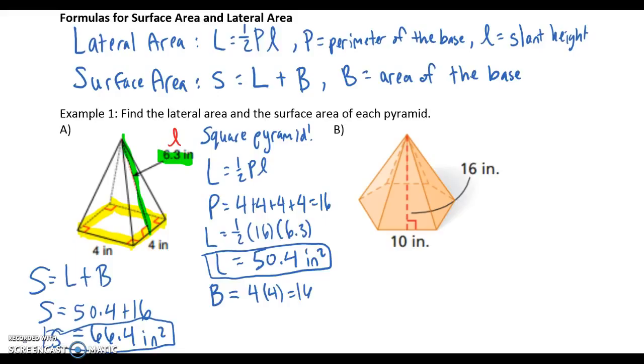Part B. What kind of pyramid is this? And can you tell me the perimeter of the base and the slant height? Well, hopefully you got hexagonal pyramid, perimeter 60, and slant height, cursive L, is 16. Let's put it all together to help us find surface area.